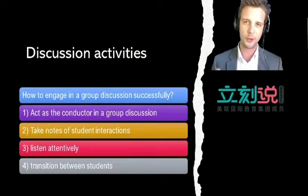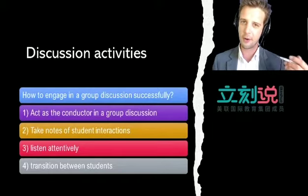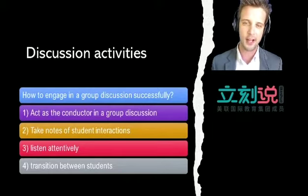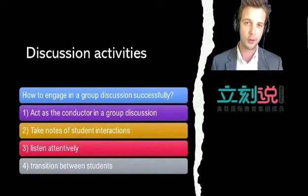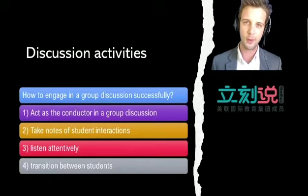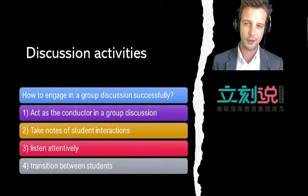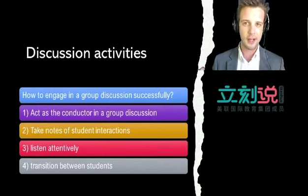Number two: take notes of student interactions. It is really important for us to give good and effective feedback directly after a discussion activity. Take notes to help you remember where to correct students. That brings me to point number three: we need to listen attentively to our students. It is really difficult to give accurate feedback if we were not listening.